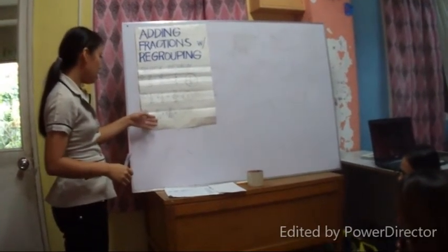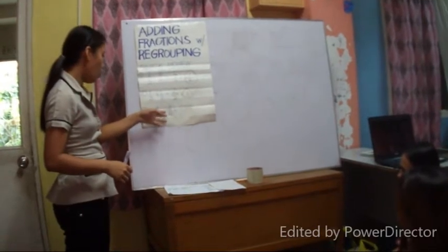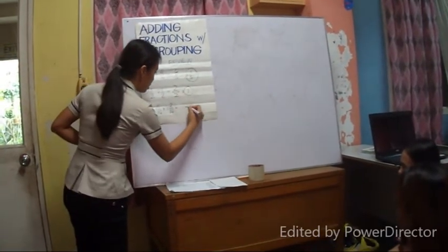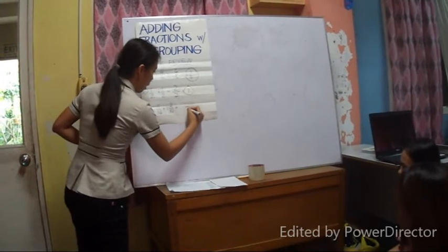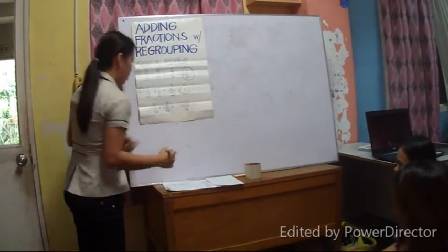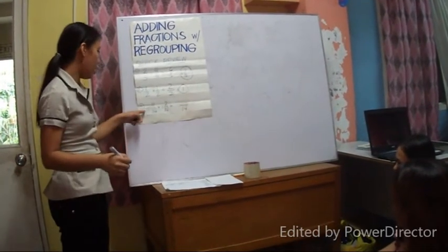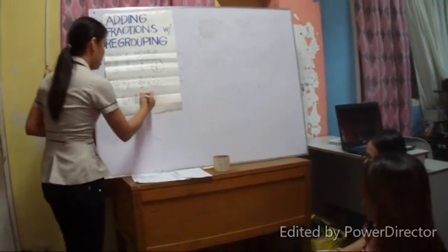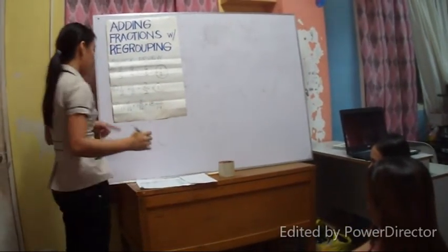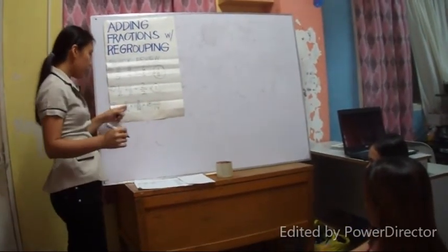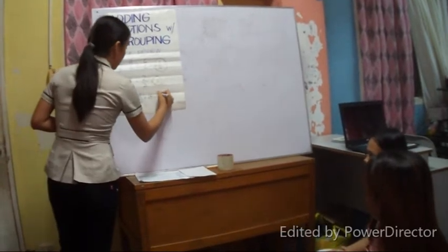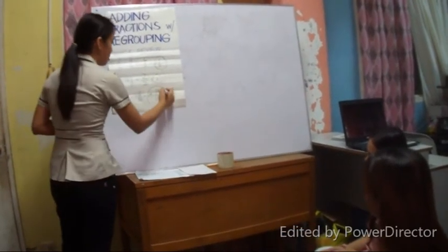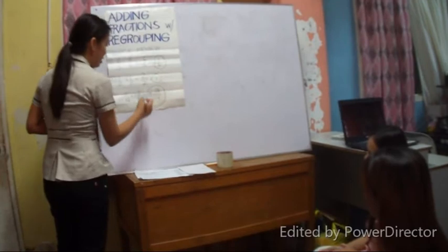17 and 11 over 14 plus 1 and 2 over 14. All we need to do is copy the denominator, and then add the whole numbers. The answer is 18 and 13. Is this in its simplified form? Yes, the answer is yes.